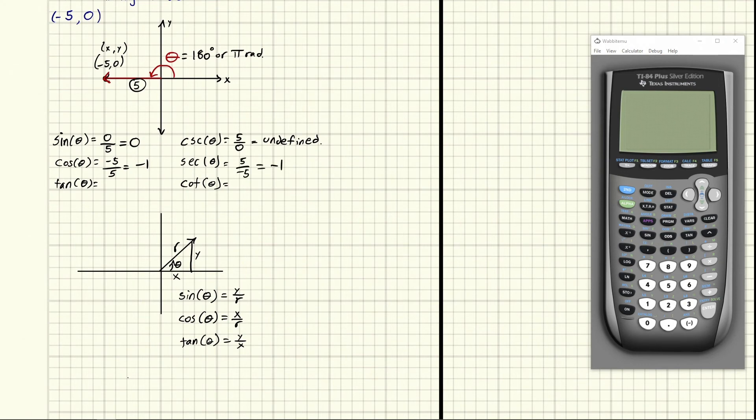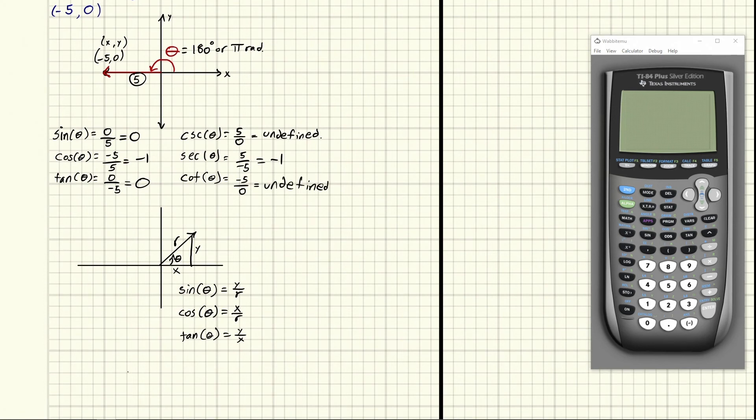For tangent that's y over x. Well y is zero, x is negative five. So we're going to get zero. But if we flip this for cotangent we're going to get negative five over zero, which is undefined because zero is in the bottom. Who the heck knows what happens when you divide by zero. It's some mysterious thing. So we put undefined.